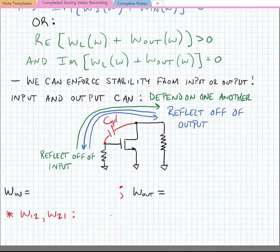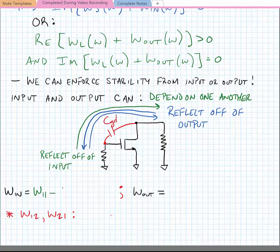Because of this reflection, we can calculate the input emittance and the output emittance. The input emittance is given by W_11 minus W_12 times W_21 divided by W_22 plus W_L. In other words, generally our input emittance should only depend upon the 1-1 parameter, but because of the interaction due to C_gd, it can also depend upon the other parameters in the network.